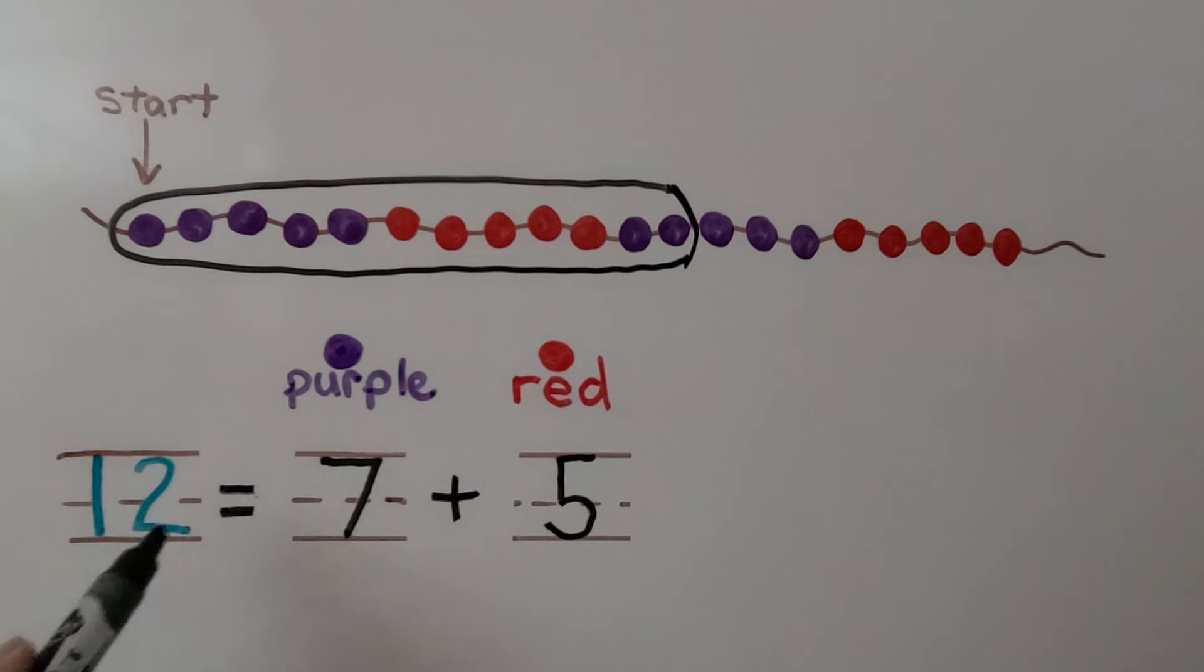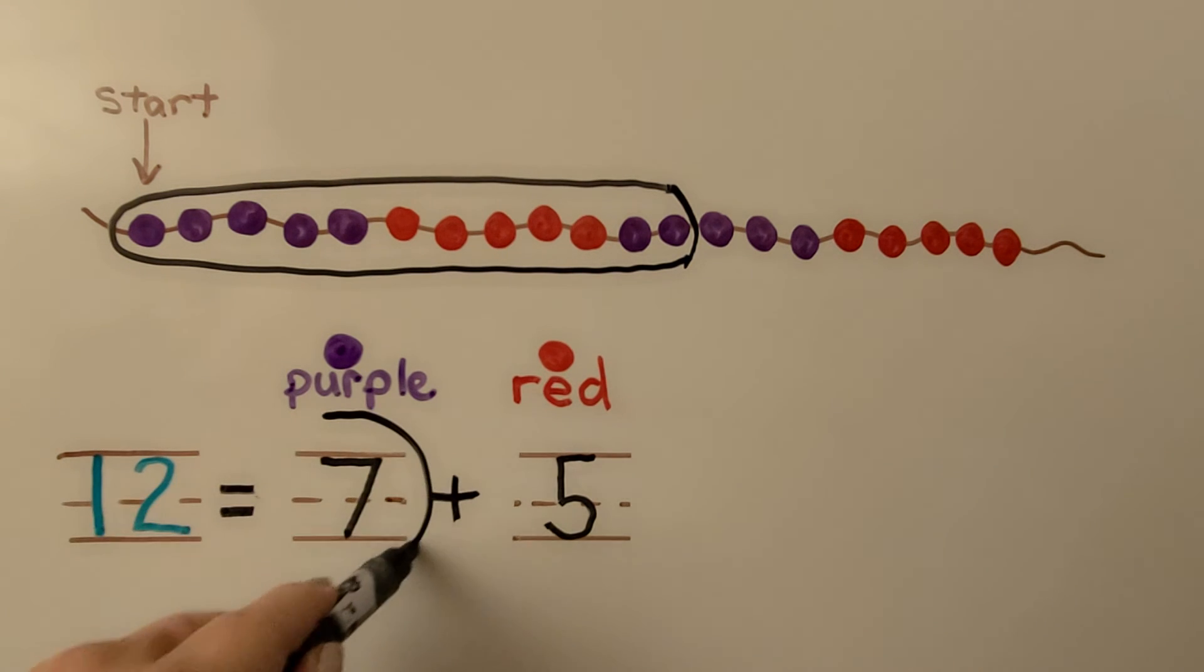12 beads is equal to 7 plus 5. Now, did we circle more purple beads or more red beads? What do you think? We need to circle the number that is more. Which is more, 7 or 5? If you said 7 is more than 5, you're right. 7 is greater than 5. There are more purple beads that we circled than red beads.